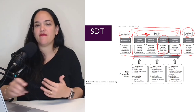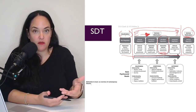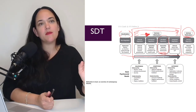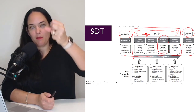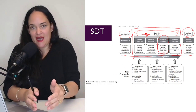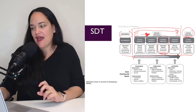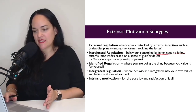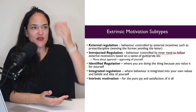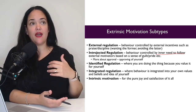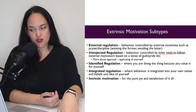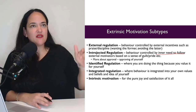With identified regulation, you're doing a particular thing because you value it for yourself — it's a consciously valued goal. For example, 'I value exercise because I know it's good for me' or 'because it promotes weight loss, which I want.' It's still somewhat extrinsic because you're not motivated by the exercise itself. Integrated regulation is one step further — the behavior is integrated into your own values, beliefs, and identity.